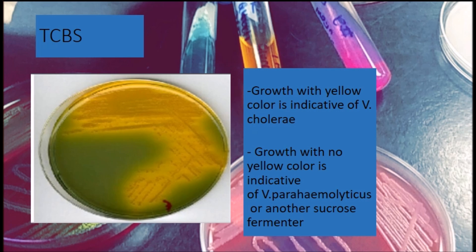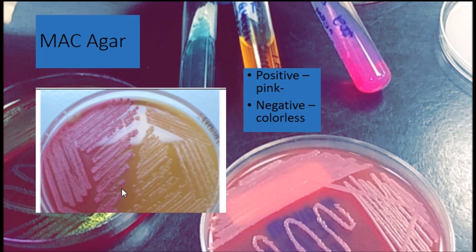Next is TCBS, which stands for thiosulfate citrate bile sucrose agar. This agar is used to differentiate organisms of the Vibrio species. The yellow color is a positive indication of Vibrio cholerae — it's a very good test for figuring out the differences between Vibrio species. If Vibrio parahaemolyticus were growing on this agar, the colonies would have a greenish color.